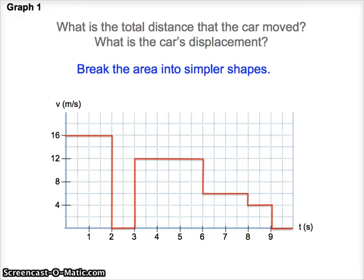Here's a car that has very distinct values of velocity at different times. It's very quickly changing its speed. If we break this shape into simpler shapes, we'll be able to determine the area between the red line and the axis.